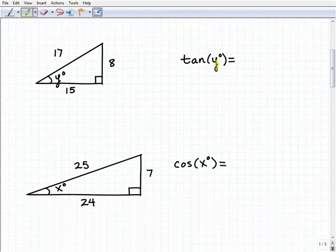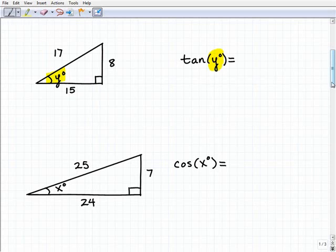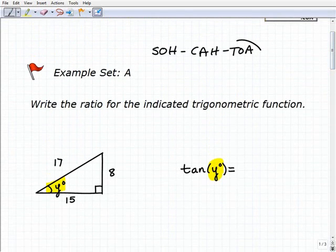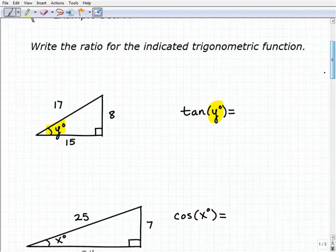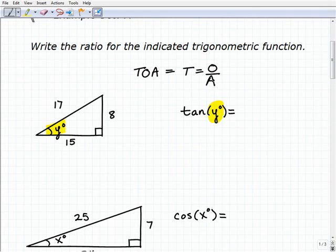Here we're asked to write the tangent of angle y. Here's angle y. So the tangent, just a quick review here, I would be using the TOA. Tangent or TOA is equal to the opposite over the adjacent. That's your TOA, T-O-A.